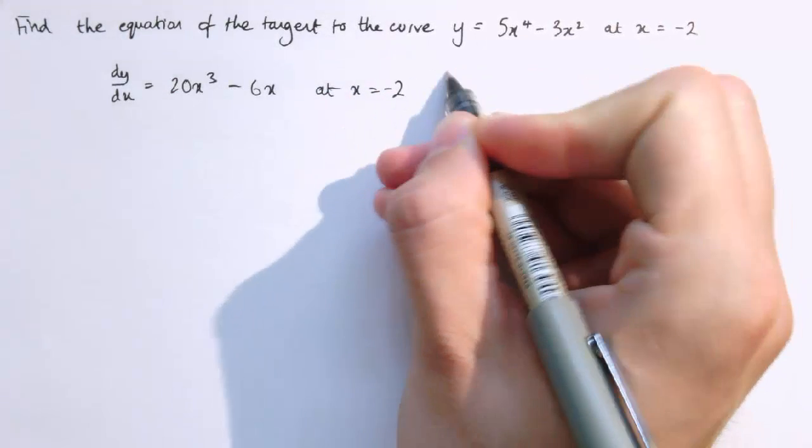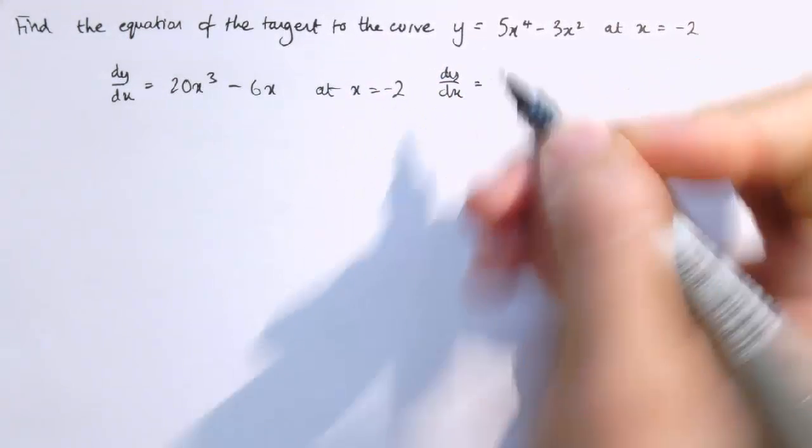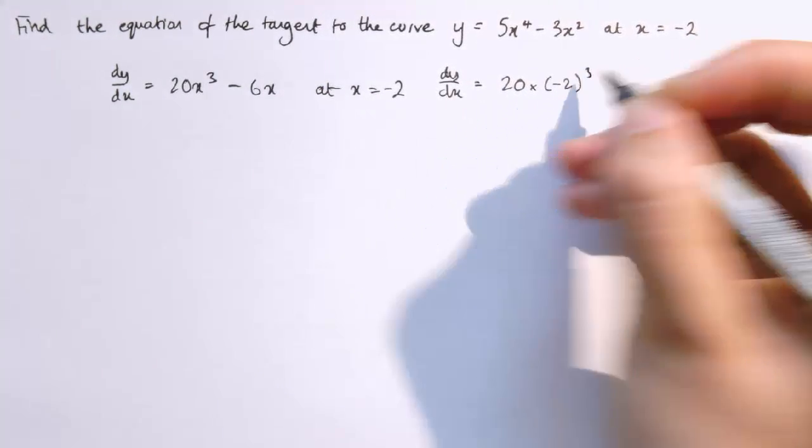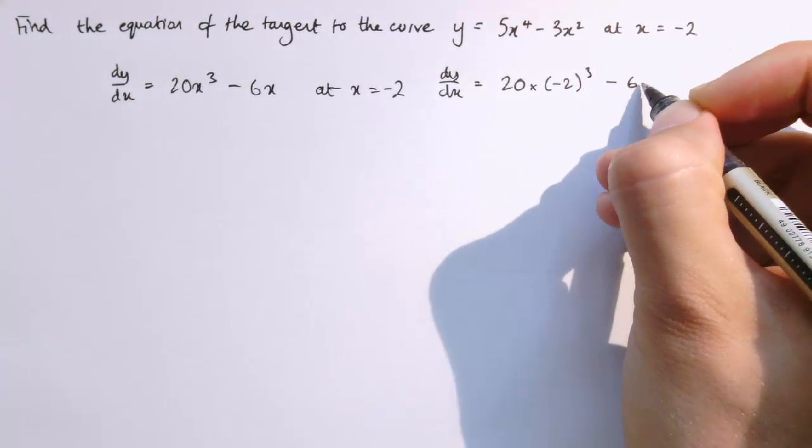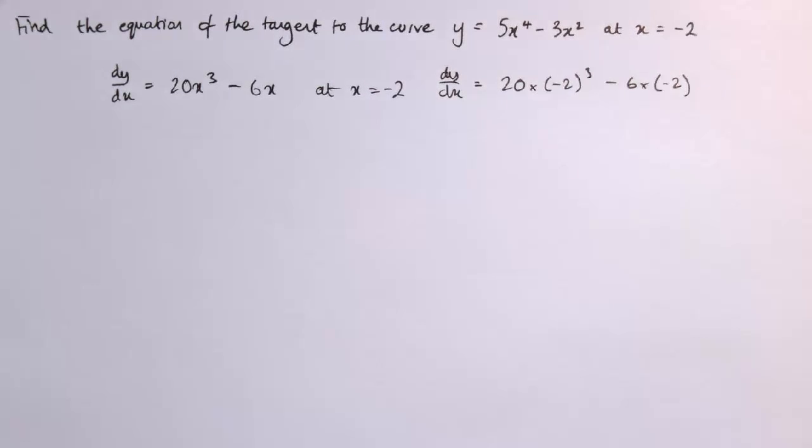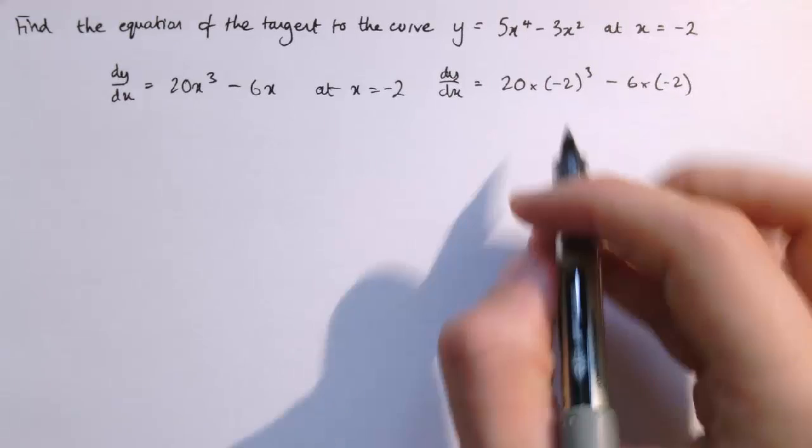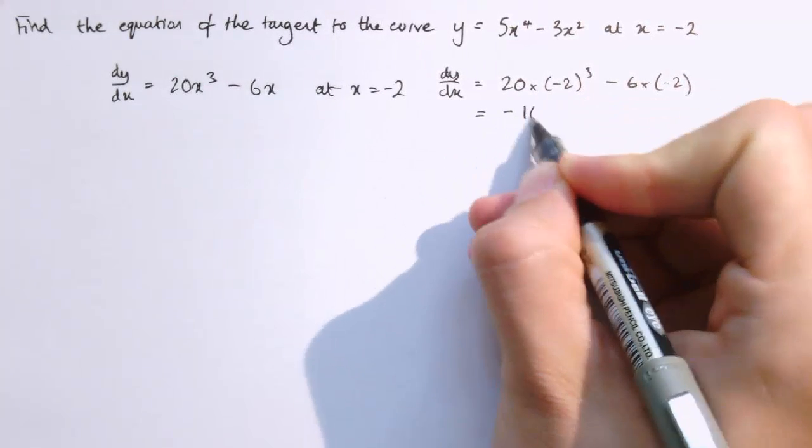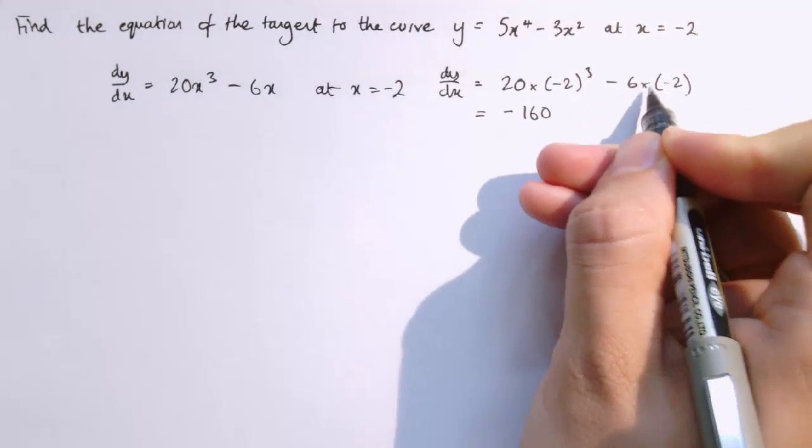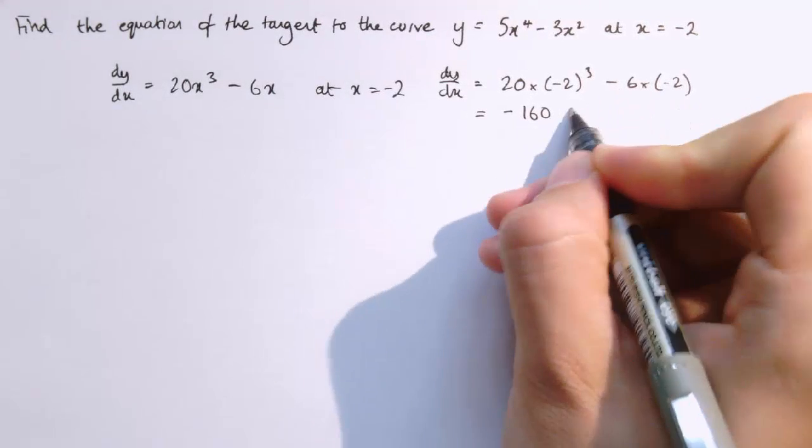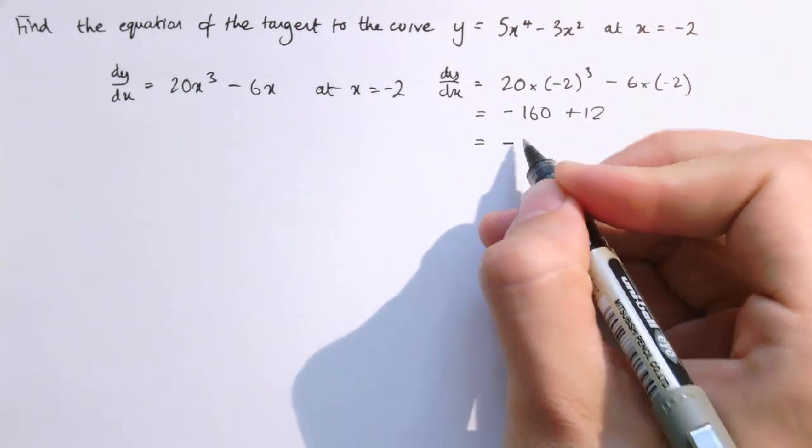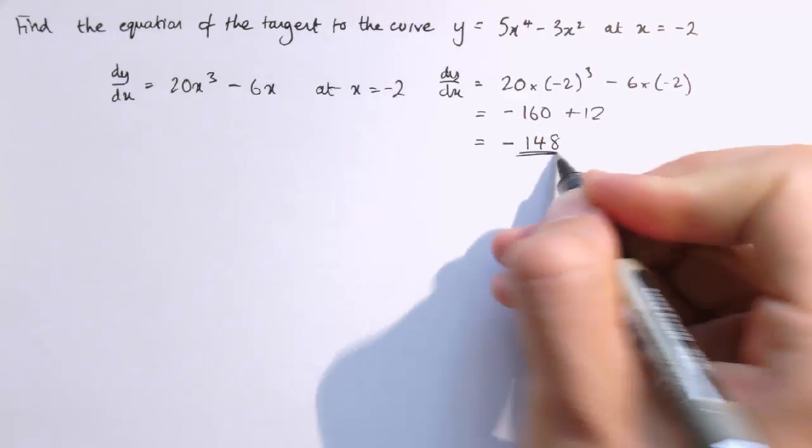At x equals minus 2, substituting into dy/dx, we get 20 times (-2)³ minus 6 times (-2). Minus 2 cubed is minus 8, so that's 20 times -8, which is -160. Minus 6 times -2, two minuses give a plus, so that's minus 160 plus 12, which gives minus 148.